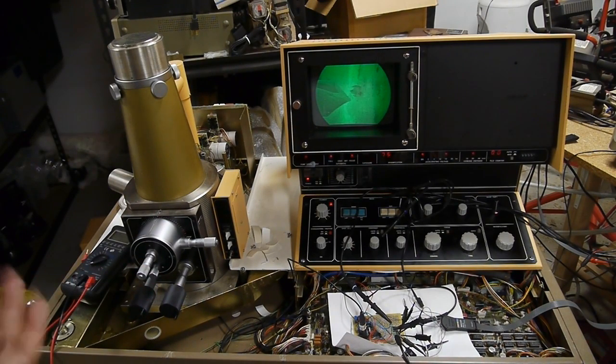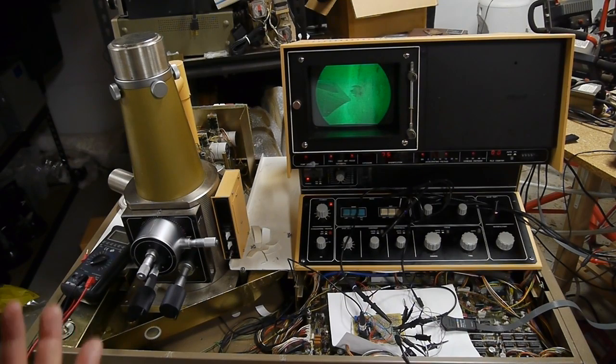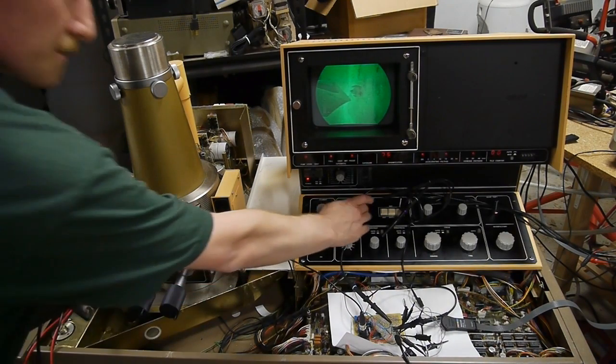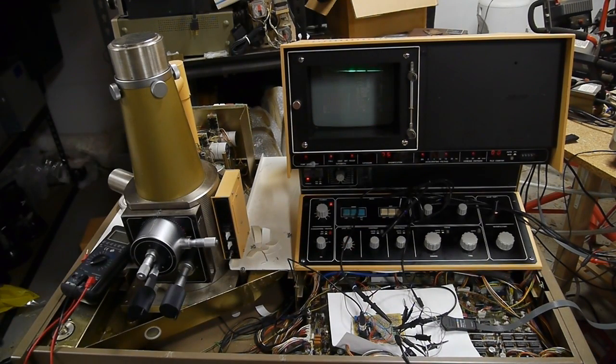But if you want a really high resolution image, we have to slow the scan way down. The scope comes with this setting, and as you can see, it's building up the image line by line—the whole thing takes about 10 seconds.